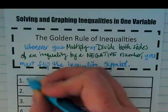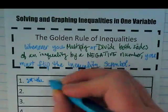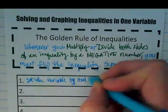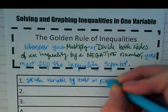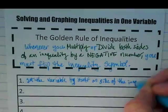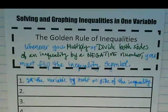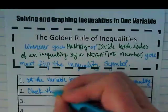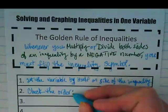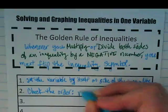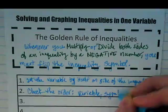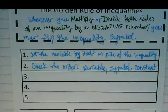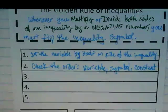Step one. Get the variable by itself on one side of the inequality. And if you can help it while you solve, you want to try to get it on the left side. Step two, check the order. Variable, symbol in the middle, constant on the right. If it's not in that order, you refer to your flip-flop page and you flip-flop it.